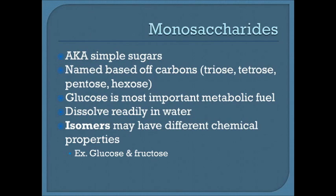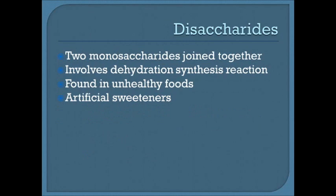Disaccharides are two monosaccharides joined together via a dehydration synthesis reaction, where water is removed to join them. They're connected by glycosidic bonds. Disaccharides tend to be found in unhealthy foods and used as artificial sweeteners. Examples include lactose (glucose + galactose), sucrose (glucose + fructose), and maltose, which is two glucose molecules bonded together.